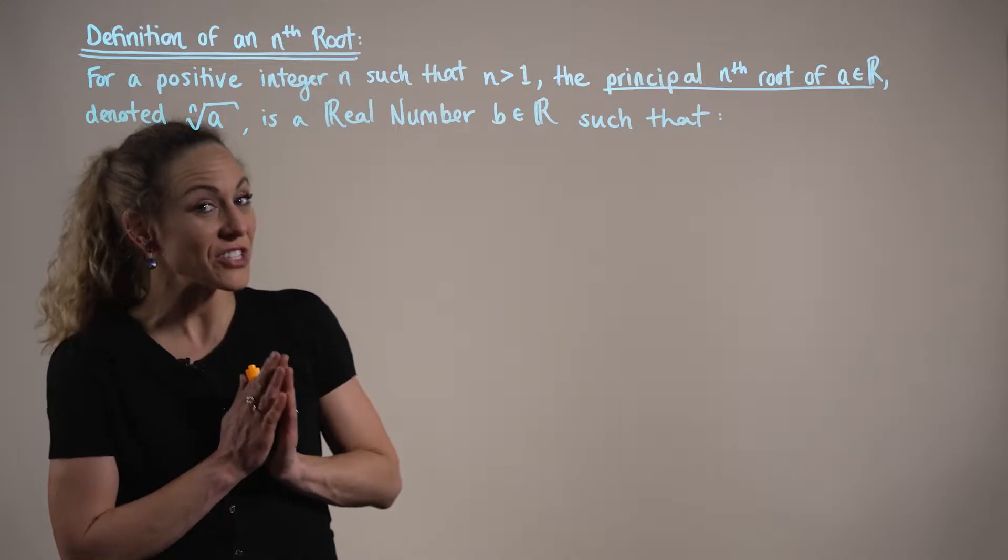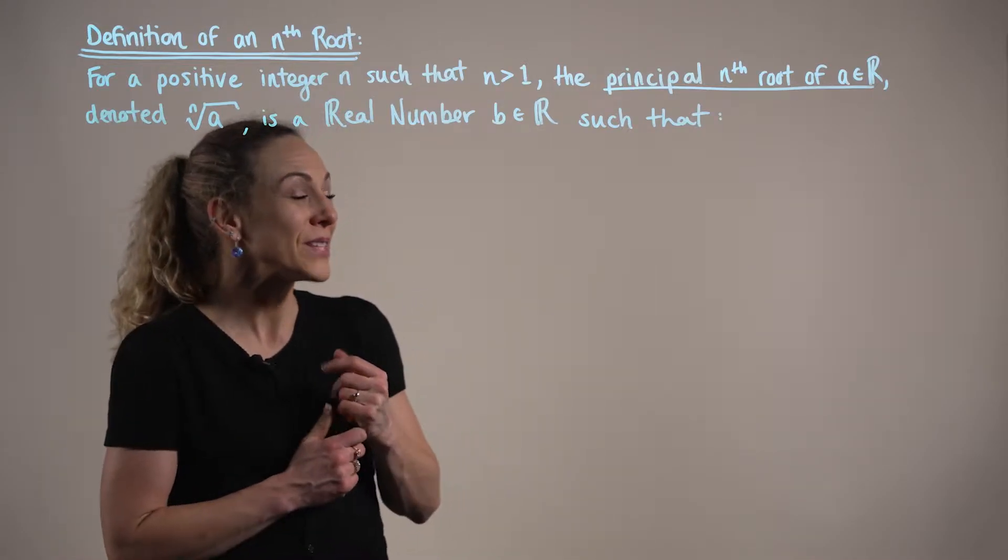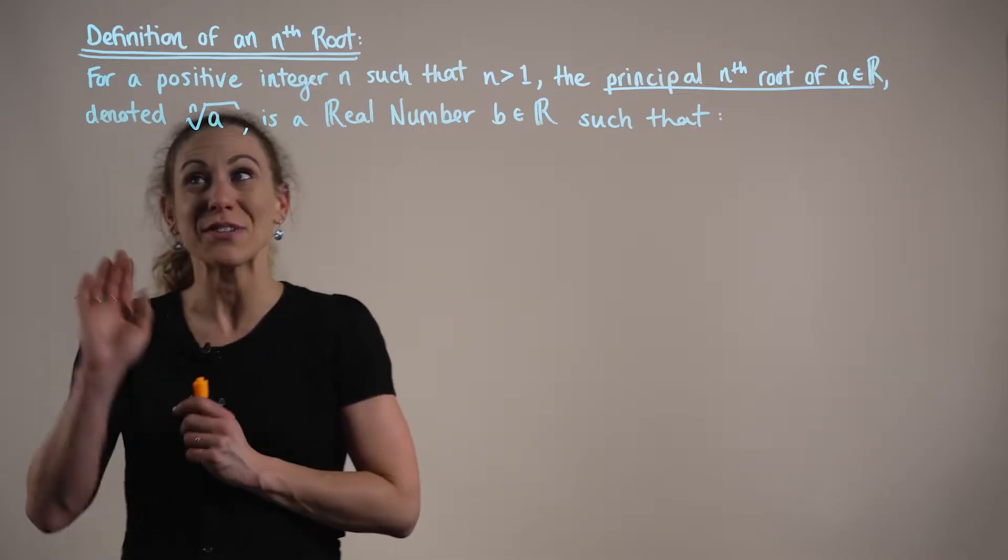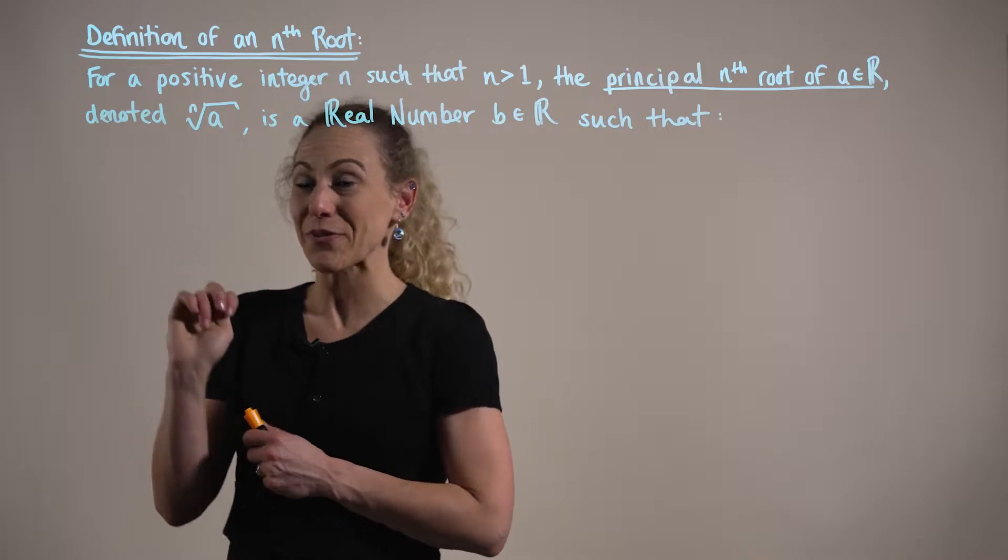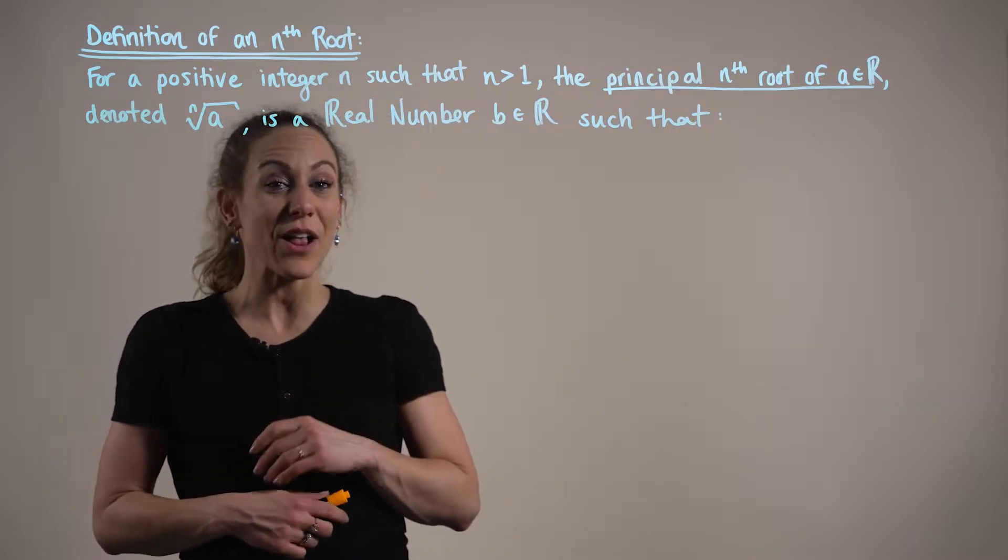We say that for a positive integer n, such that n is strictly greater than 1, the principal nth root of a real number a, which is denoted using the nth root of a, is going to be equal to a real number b, such that the following holds true.